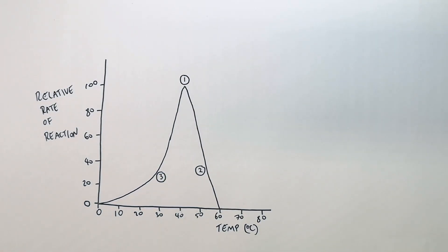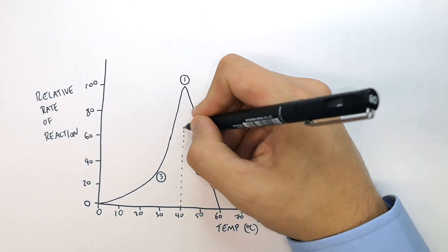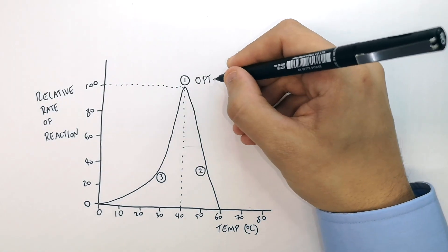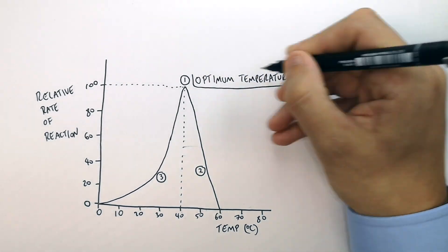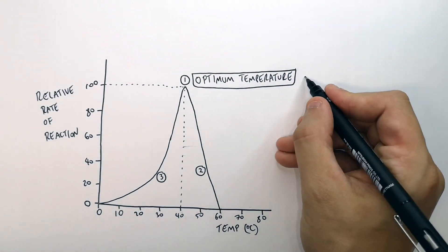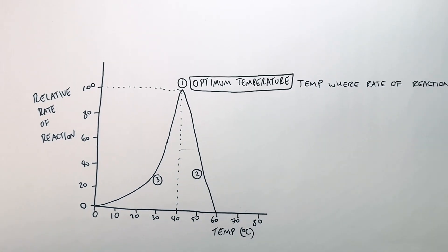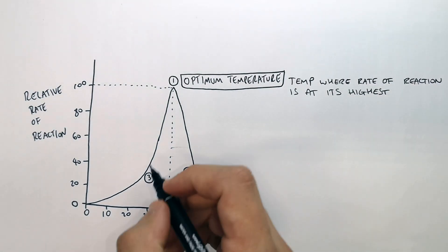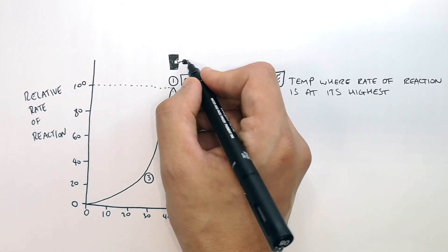We always start at the optimum temperature, where the rate of reaction is at its highest. This is an important key word — it means the temperature where the rate of reaction of the enzyme is at its highest. This is where the enzyme is working at its peak rate. In this case you can see it's at 100.